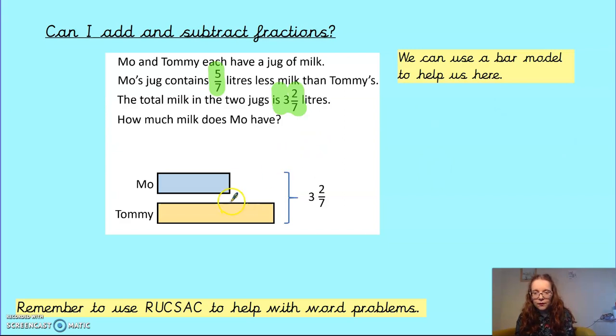Well, if I do this, Moe's jug contains 5 7ths litres less milk than Tommy's, which is the same as saying that Tommy's has 5 7ths more than Moe's. So now, what can I do? Well, I know that this bit is going to be equal to 3 and 2 7ths take away 5 7ths.